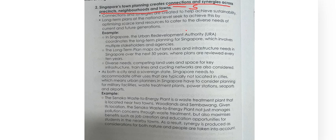How about my definition? So let's look at the first point. Connections and synergies are created to help achieve sustainability. Does it help to define what connections and synergies are talking about? It doesn't really help, but let's move on. Long-term plans at the national level seek to achieve this by optimizing scale and resources to cater to the diverse needs of current and future generations.